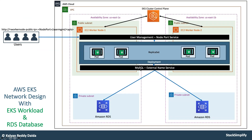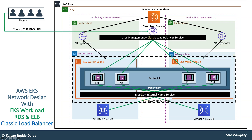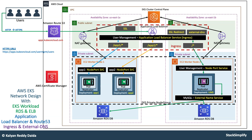Then you will move on to the load balancers section. Before that, we know that load balancers need to run on public subnets and workloads need to run on private subnets. You'll delete the existing worker nodes and move your workloads to private subnets, create a Classic Load Balancer in the public subnet and access it. Then you will also create a Network Load Balancer manifest and test it, before moving on to the Ingress service, which is super advanced with tons of features.